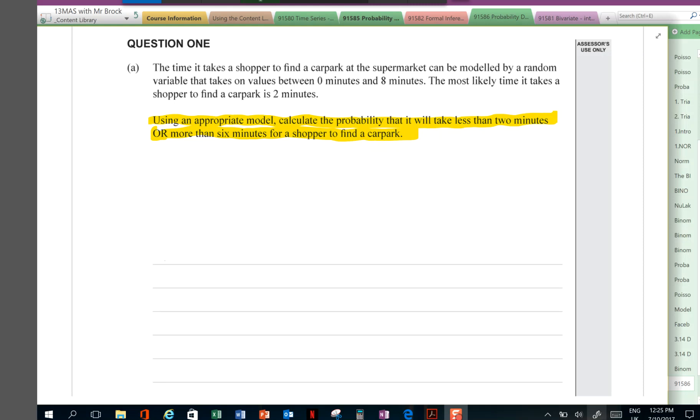So, we're dealing with a continuous variable, time. Which distributions could that be? Which distributions do we usually use to deal with continuous variables in this course? It could be the normal distribution, the uniform distribution, or the triangular distribution.